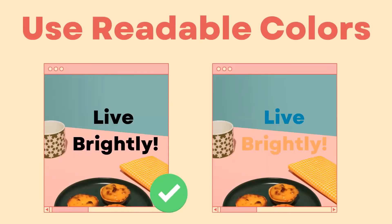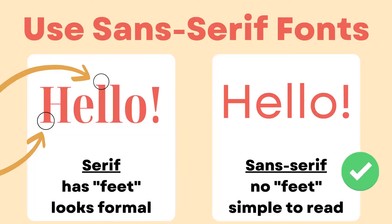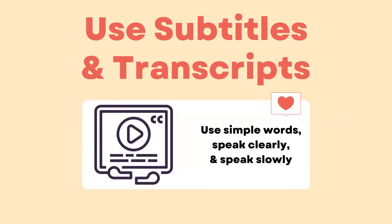Use readable colors — use font and background colors that are easy to read, especially for colorblind people. Use sans serif fonts; if you use roman letters on your slides, use fonts that don't have feet or serifs so text on your screen is easy to read. Use subtitles and transcripts — this is especially useful when the language you are teaching in is different from a student's first language. Just like in your physical classroom, use simple words, speak clearly, and speak slowly. There are a lot of tools that use artificial intelligence to automatically create subtitles, but not all languages will be supported, so you may want to create subtitles manually.